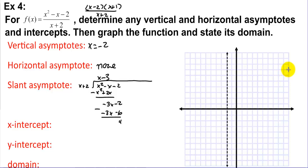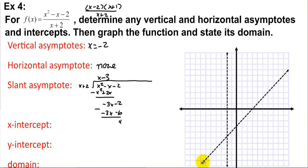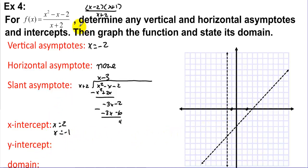We graph the slant asymptote y = x - 3 with y-intercept at -3 and slope 1. For x-intercepts, we set the numerator to zero: x = 2 and x = -1. The y-intercept is found by plugging x = 0 into the original function, giving y = -1.